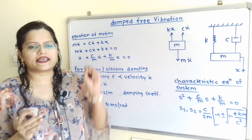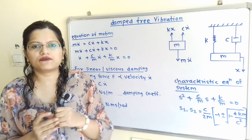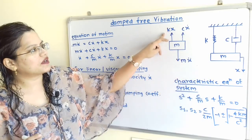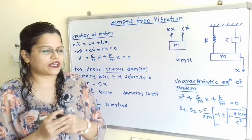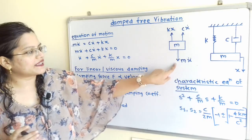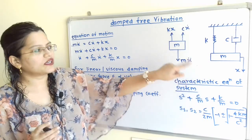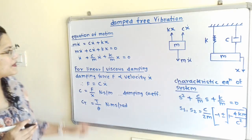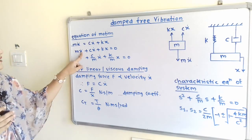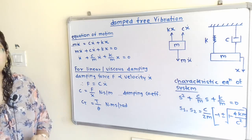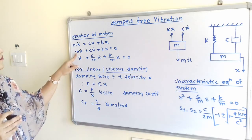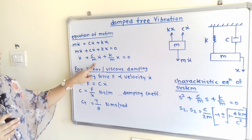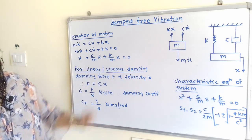With the help of the free body diagram we can write the equation of motion. For the downward direction we consider a negative sign, and for the upward direction a positive sign. From the free body diagram: minus M X double dot equals K X plus C X dot. Simplifying: M X double dot plus C X dot plus K X equals 0. Dividing by M: X double dot plus (C/M) X dot plus (K/M) X equals 0.